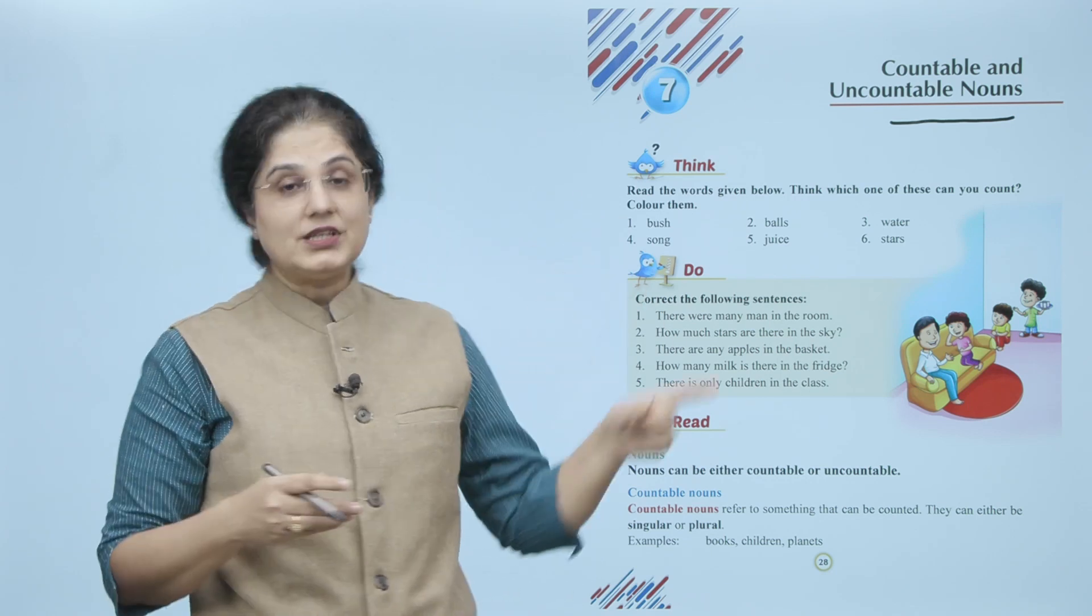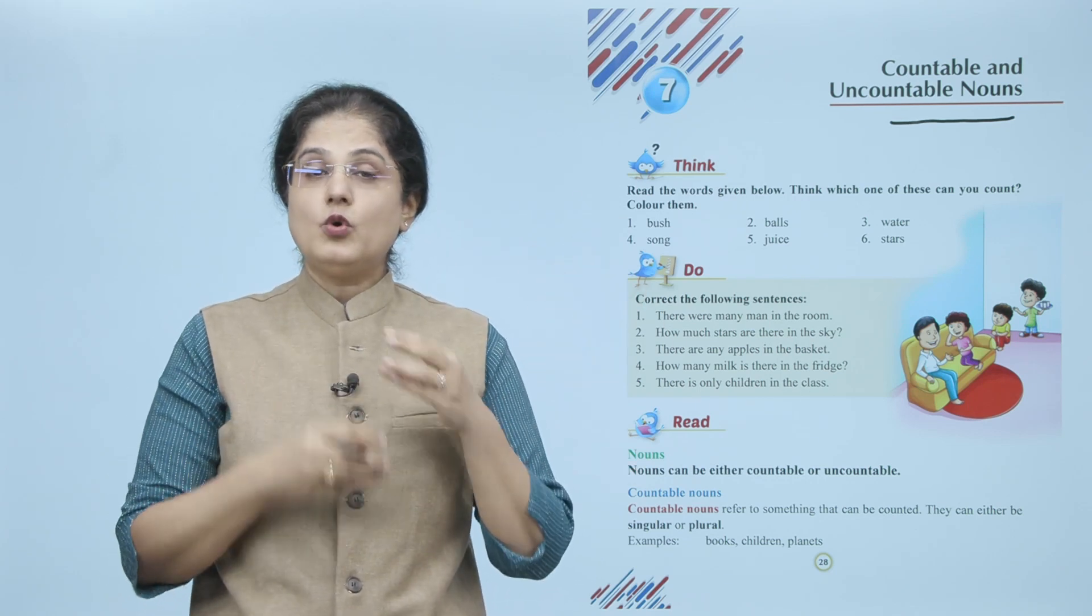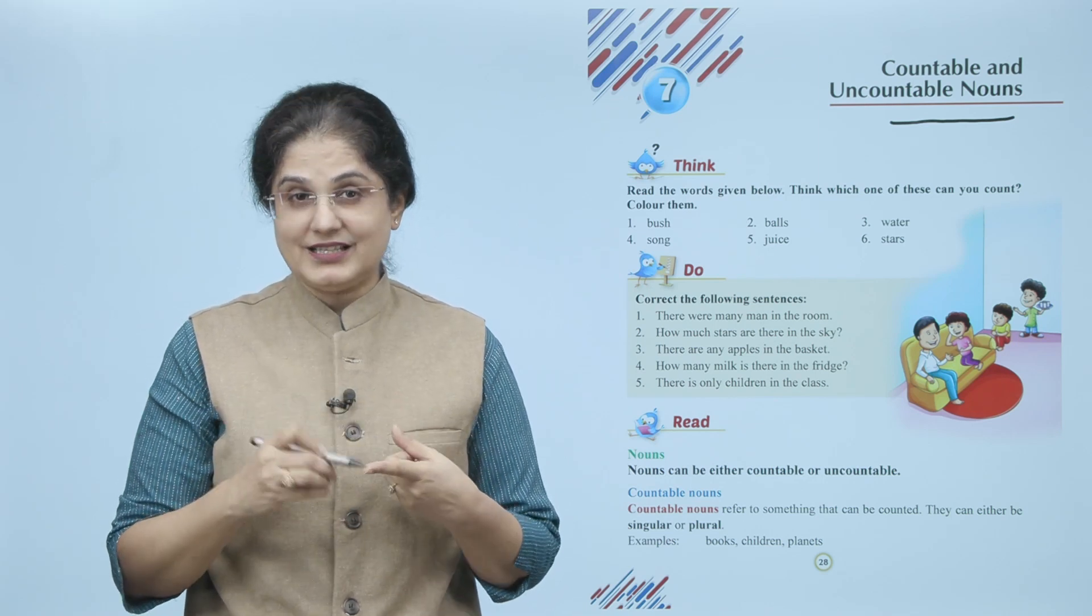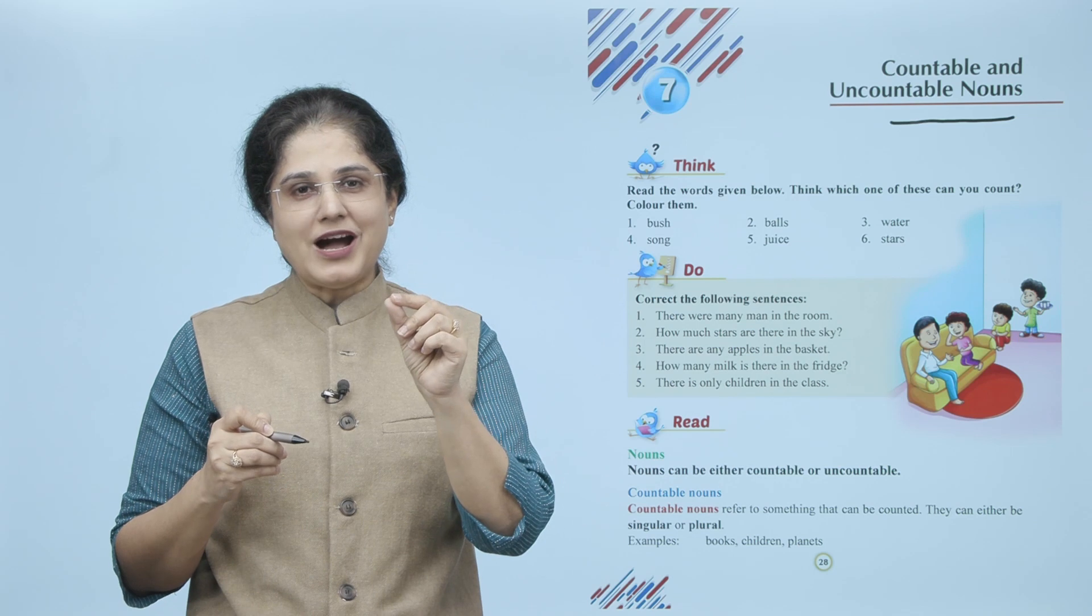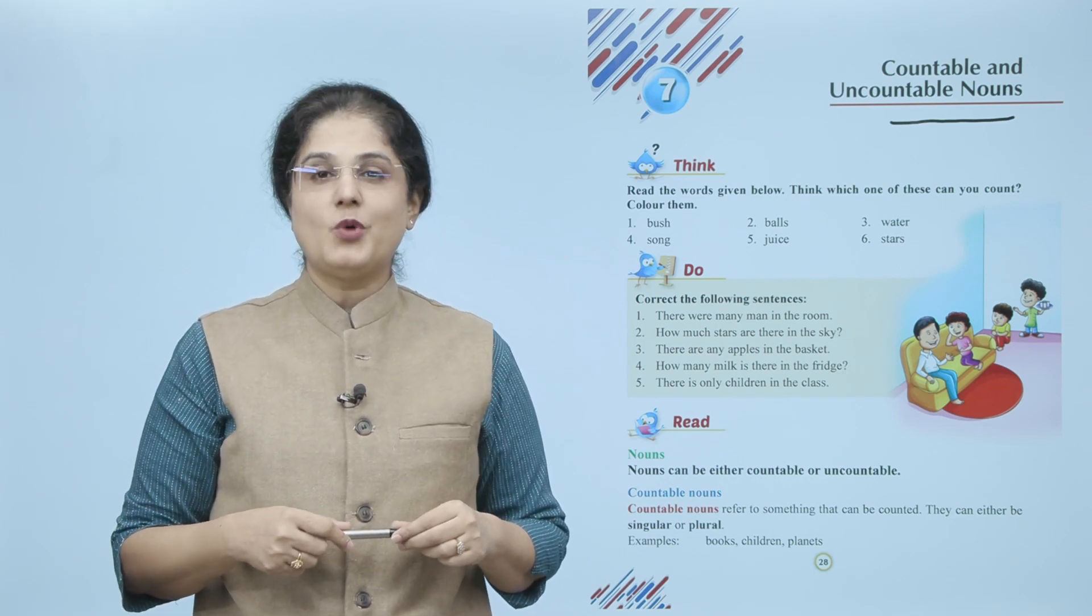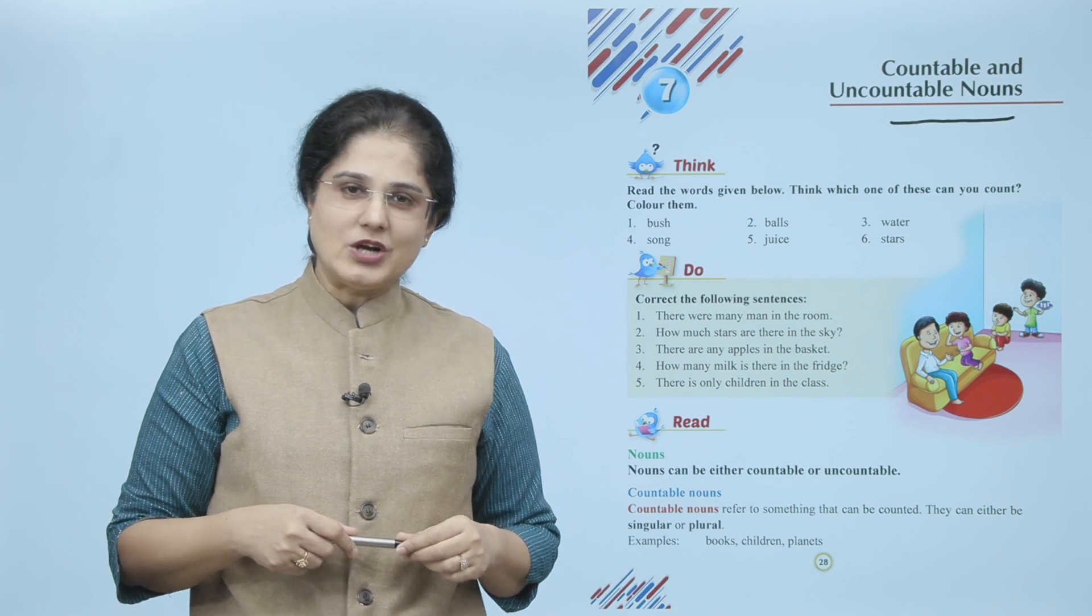Aapko yaha pe jo words diye gaye hai, unme se kaun se aise words hai jinko aap count kar sakte hai, to un words ko aap color kijiye. Words kya hai: bush, balls, water, song, juice, stars. Let's do this - correct the following sentences. Yaha pe jo aapko sentences diye gaye hai unko sahi karke likhiye.